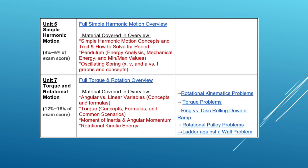In Unit 6, we have simple harmonic motion. It's not an easy unit, but it has a low score approximately from 4% to 6%. It has simple harmonic motion concepts and traits and how to solve for period, pendulum, mechanical energy with the minimum and the maximum value, oscillating springs also. And the last unit is about torque and rotational motion. It has a good score actually from 12% to 18%. It talks about the differences between angular and linear variables, torque, moment of inertia, angular momentum, rotation and kinetic energy.